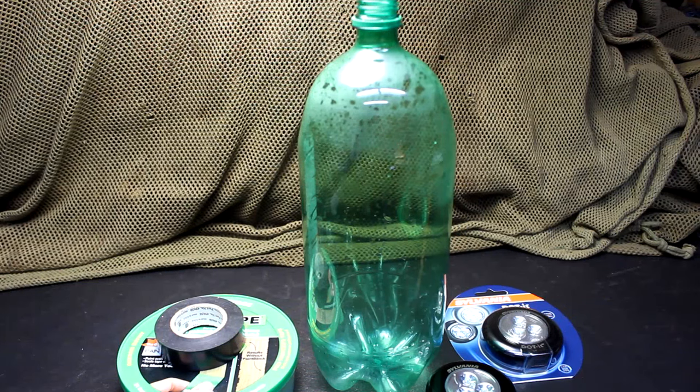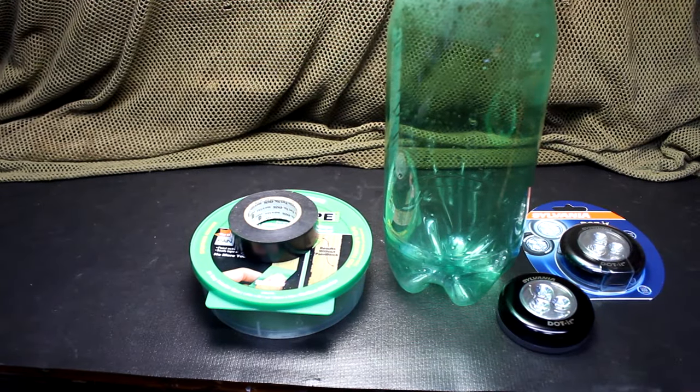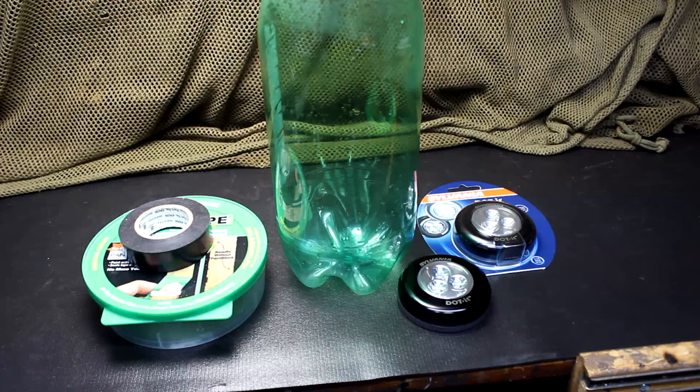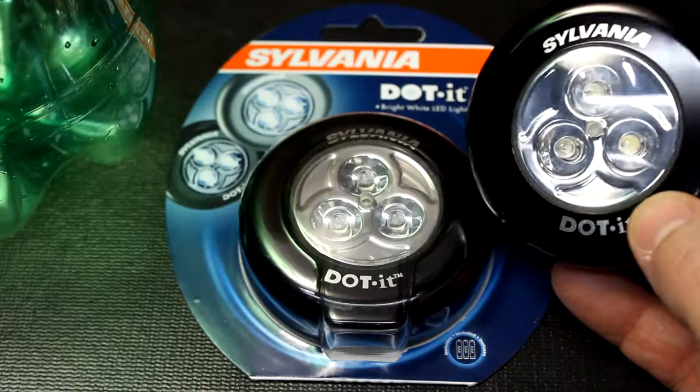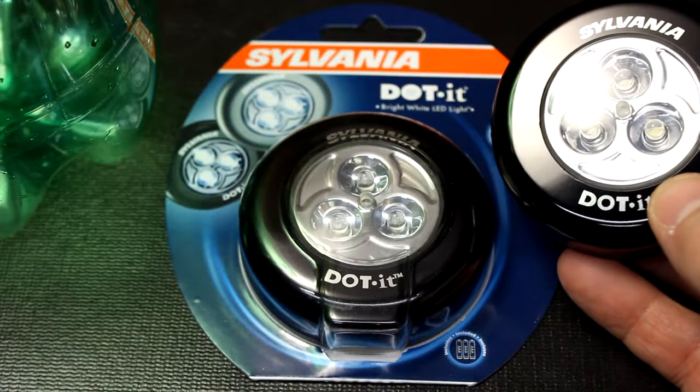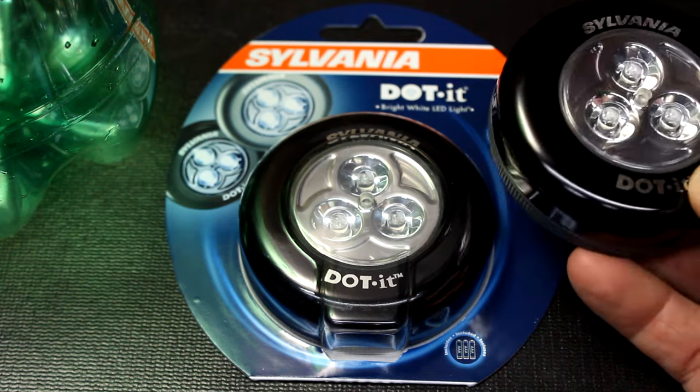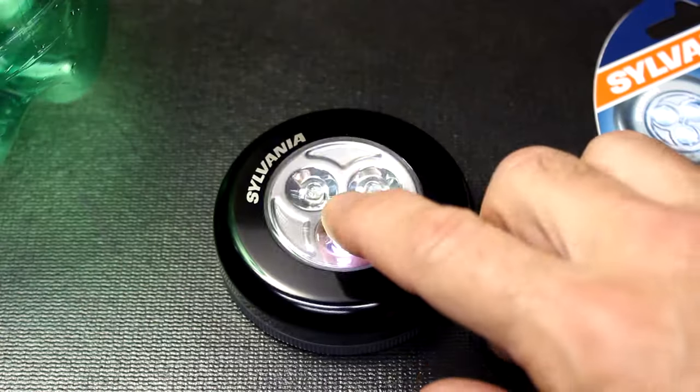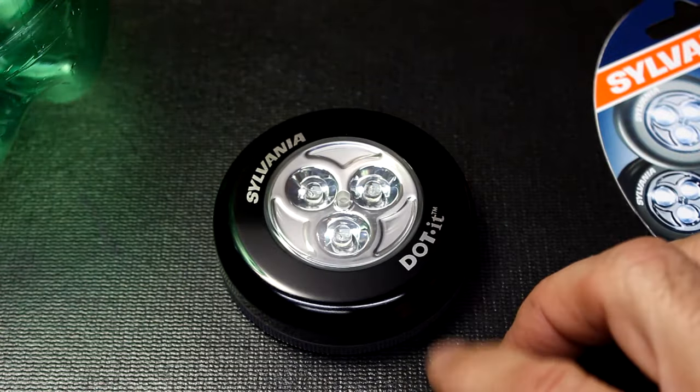First thing you'll need is a two liter bottle, some electrical tape, a little bit of masking tape, and then a couple of the push button lights. I picked up these lights for five dollars and sixty cents a piece and they carry three triple-A batteries. Just push it on, turn it off.